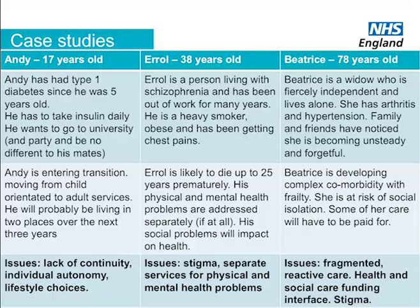These are three not-atypical cases challenging the NHS at the moment. Andy, a young diabetic, is about to transition from child to adult services. A paper published from Oxford on children transitioning from renal transplant services to adult transplant services found that 25% of the children lost their transplant in that transition. Then we've got Errol, with mental health and physical health problems, predicted to die 25 years prematurely compared with the rest of the population.